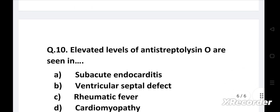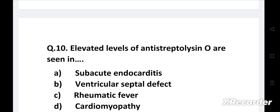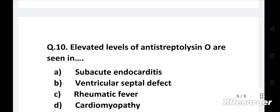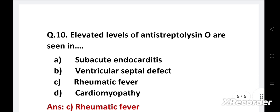Next question: Elevated levels of anti-streptolysin O are seen in: Option A - Sub-acute endocarditis, B - Ventricular septal defect, C - Rheumatic fever, D - Cardiomyopathy. Right answer is Option C - Rheumatic fever. Anti-streptolysin O testing is a procedure that demonstrates the presence of antibodies generated by the body against infections by group A streptococcus. Elevated levels of anti-streptolysin O are seen in rheumatic fever.